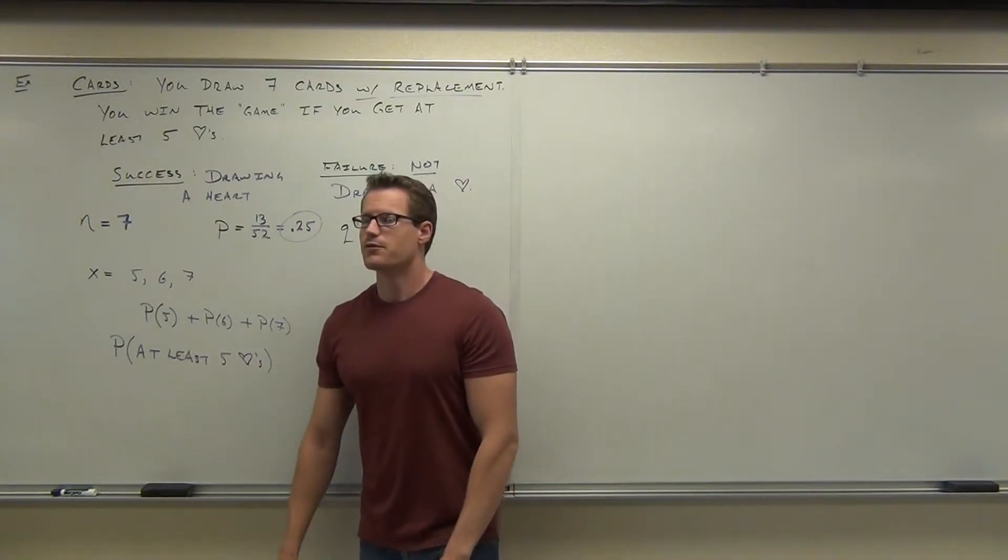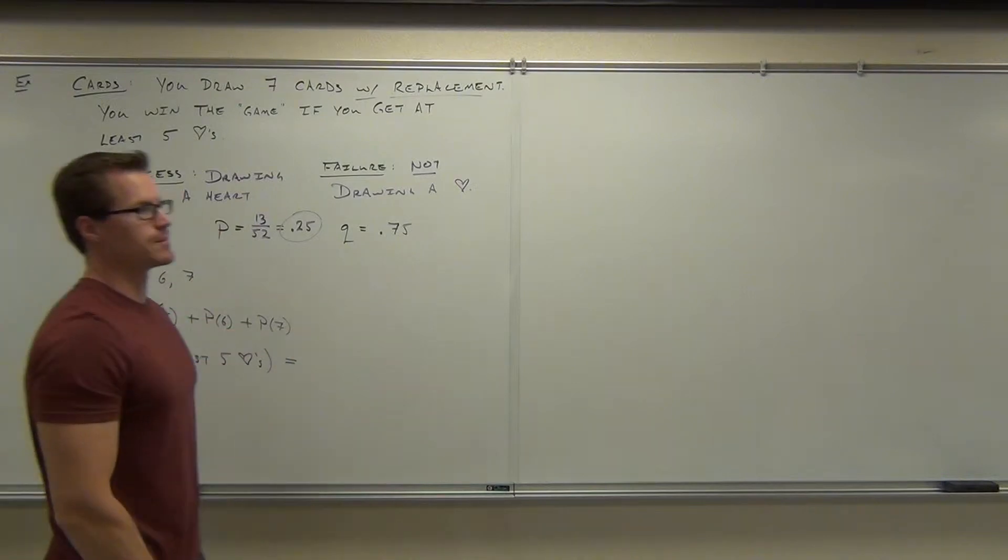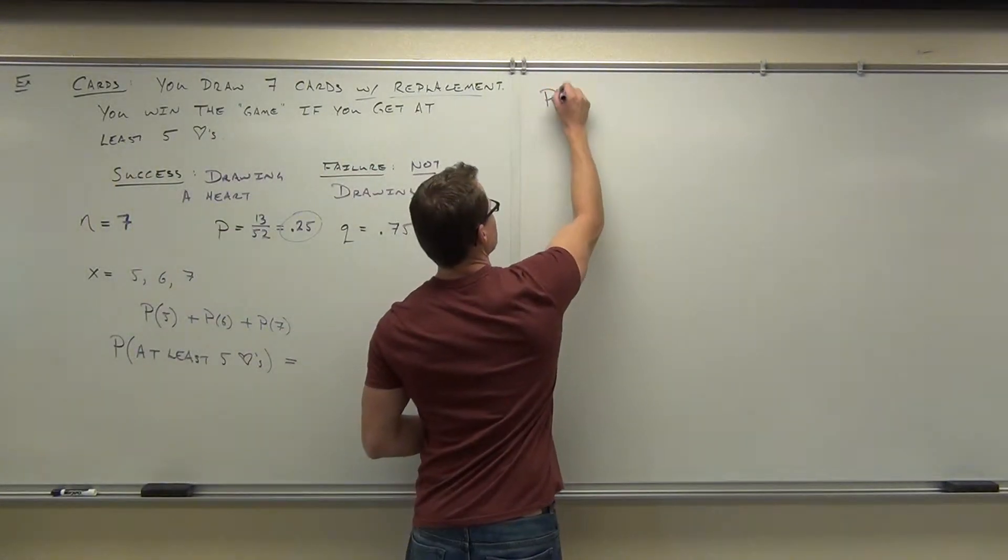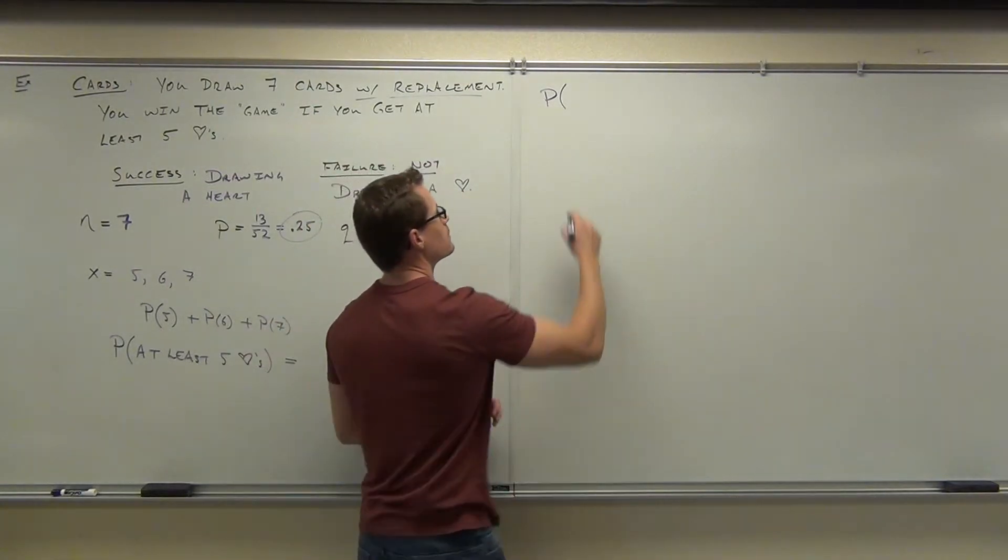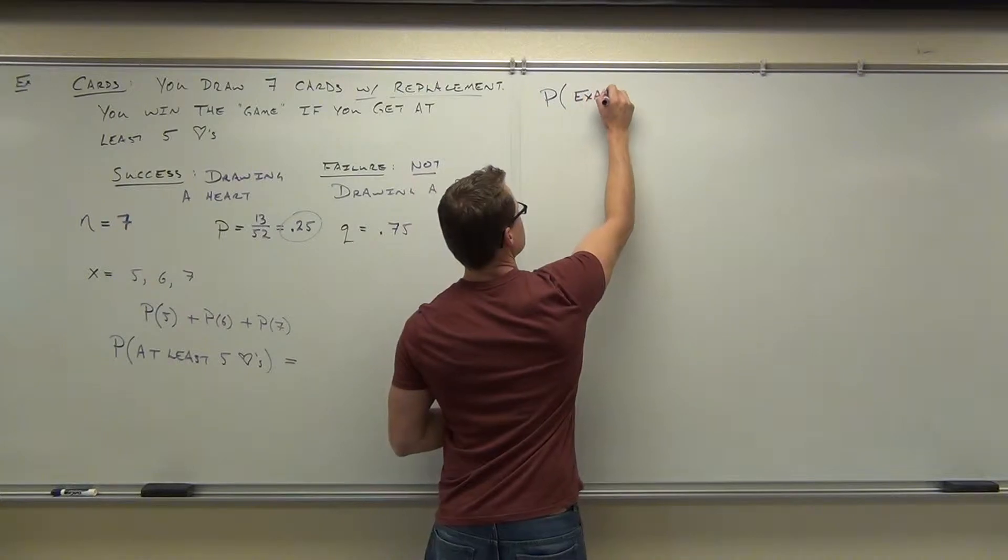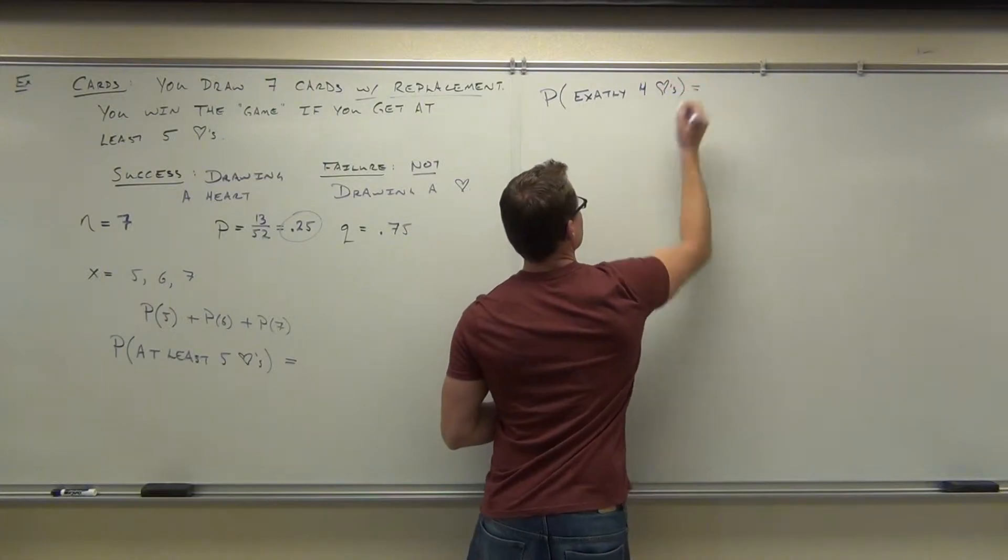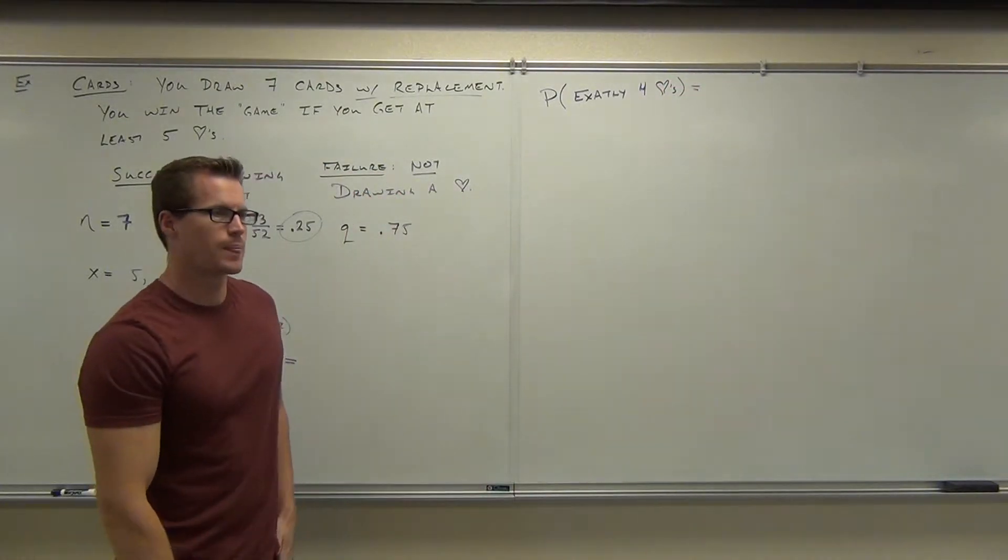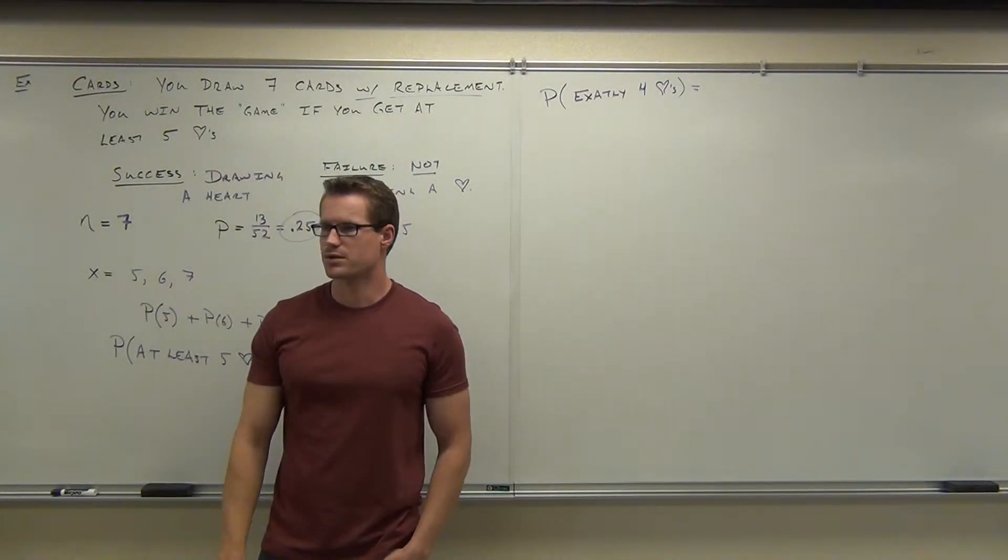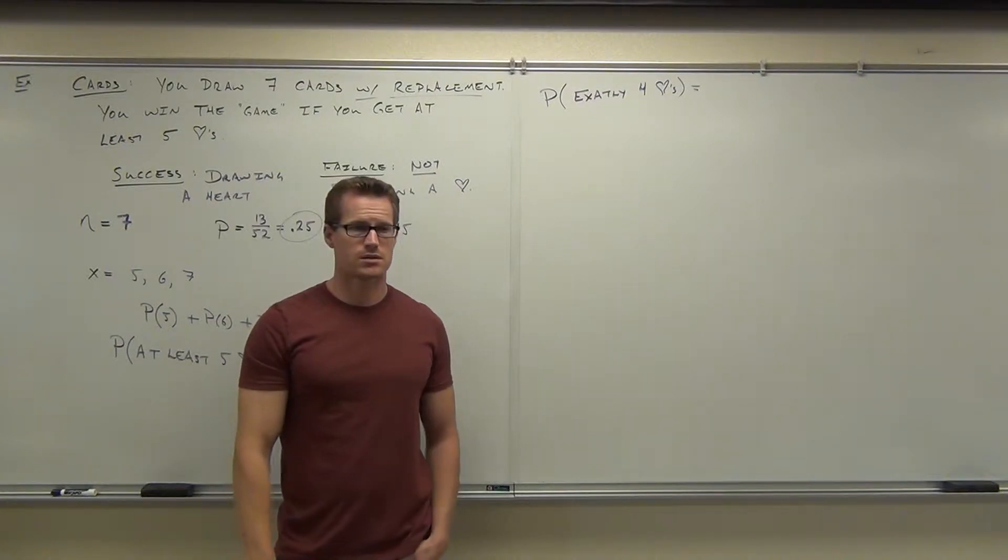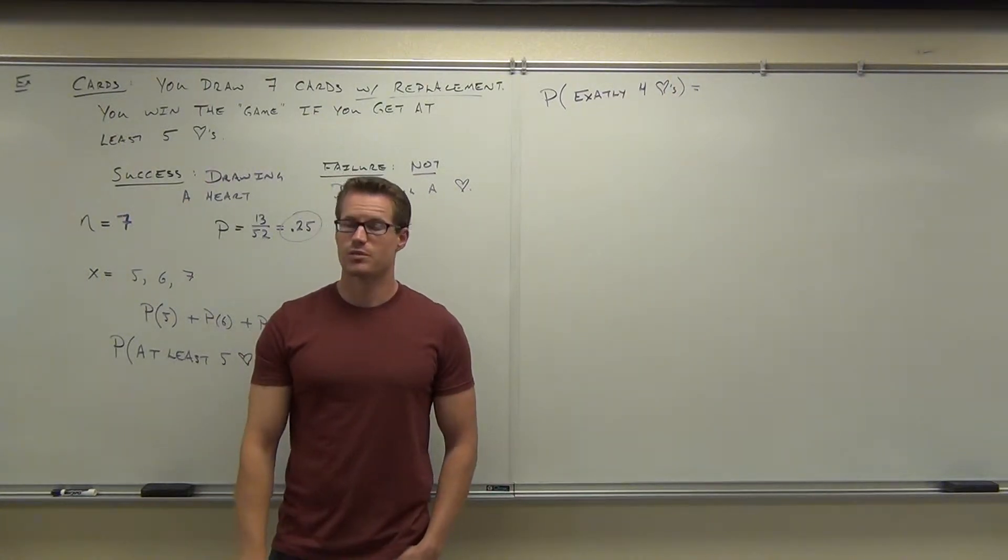We're going to change our game a little bit. Firstly, let's say that this is our first game. We're going to figure this out in just a bit. Let's say that the next game is you win the game if you get exactly four hearts. How many successes are we looking for there? How many successes if I'm getting four hearts?